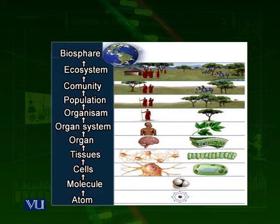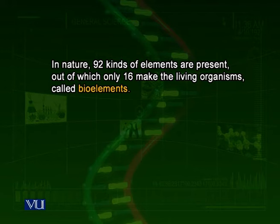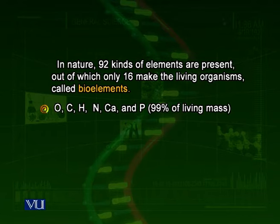Atoms. This word comes from Greek — 'atom' meaning 'not to cut.' This is the smallest part of an element that is not dividable further. In nature, there are about 92 elements. Among these, only 16 make up living things. Among these 16, a few elements make up about 99% of living beings.